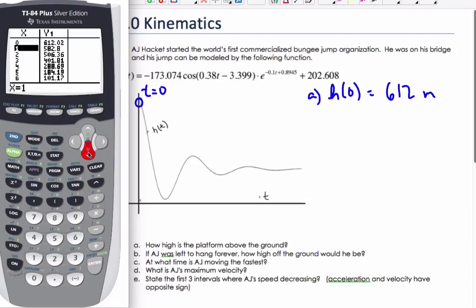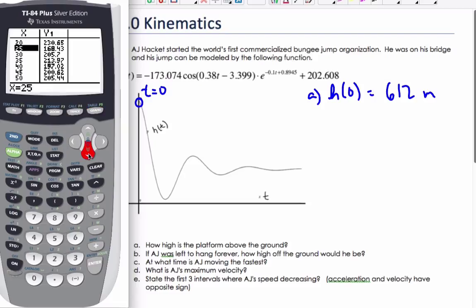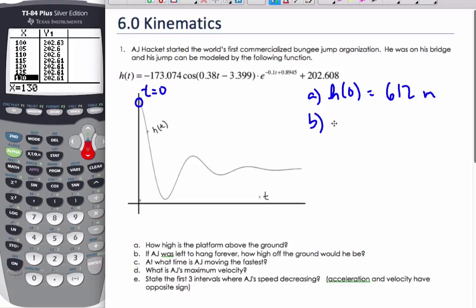Well, if I look at my table and if I change my table setting by second window, let's go up by fives and let's start at 20, then I'll go to my table. As I go up by fives, I can see that it's hovering around 202.6. I'm going to guess this value here is going to be my limiting value. This must go towards zero as t gets large. And so what we can say is as t goes to infinity, the height goes to 202 meters to three significant figures.